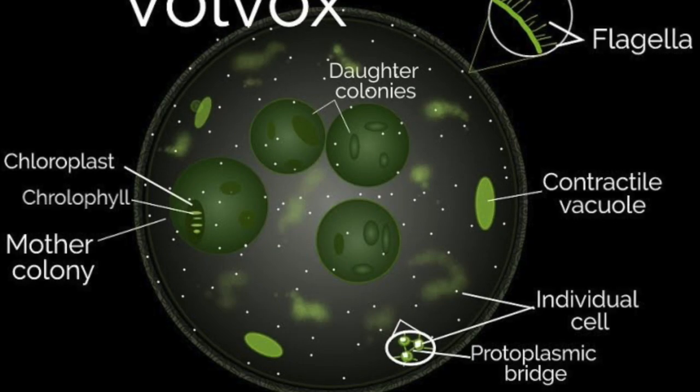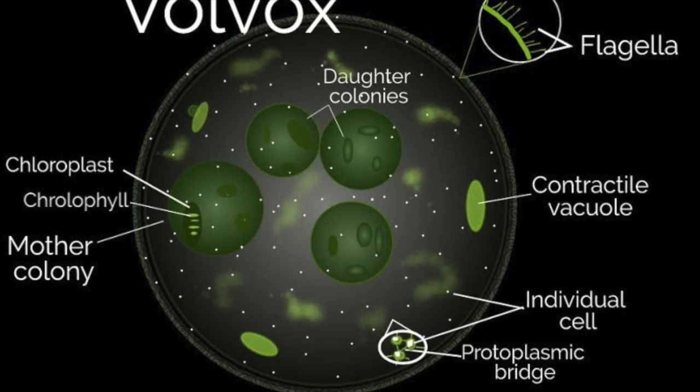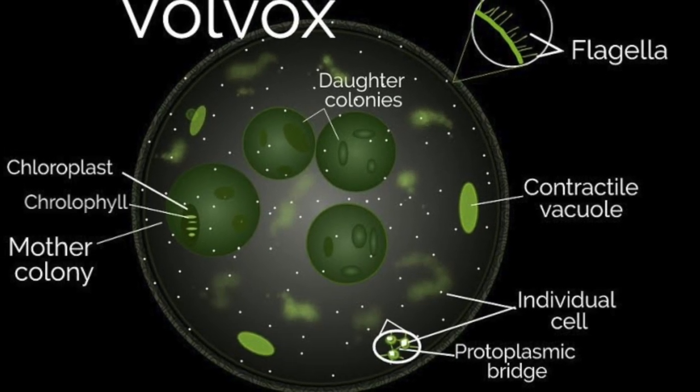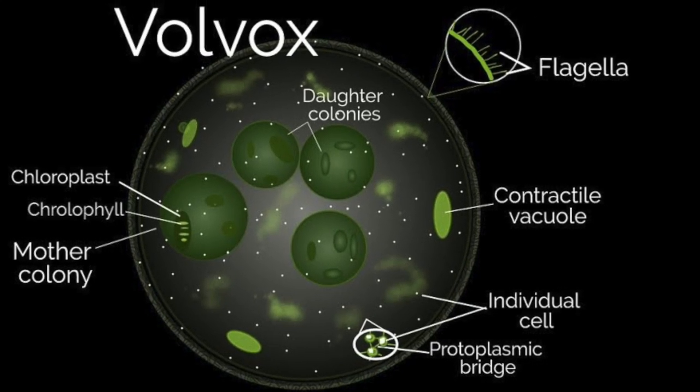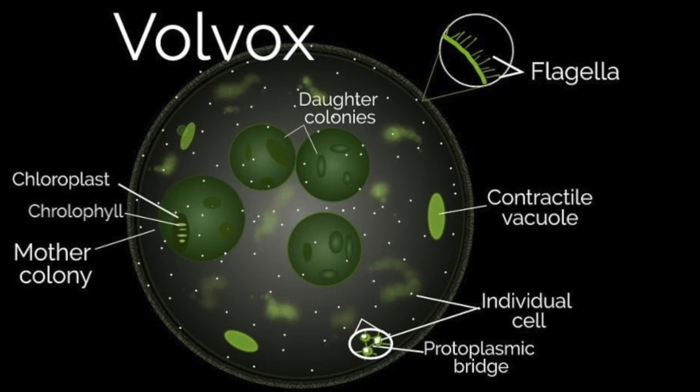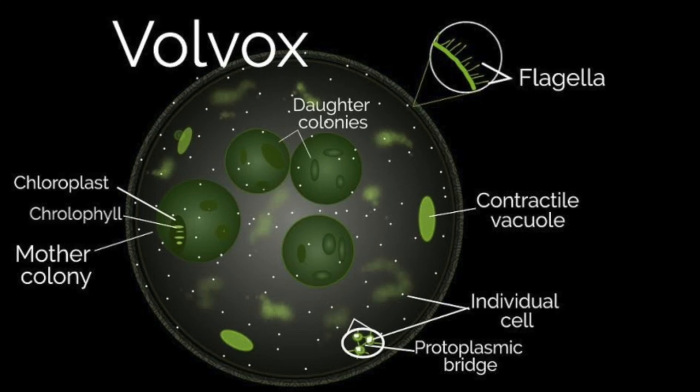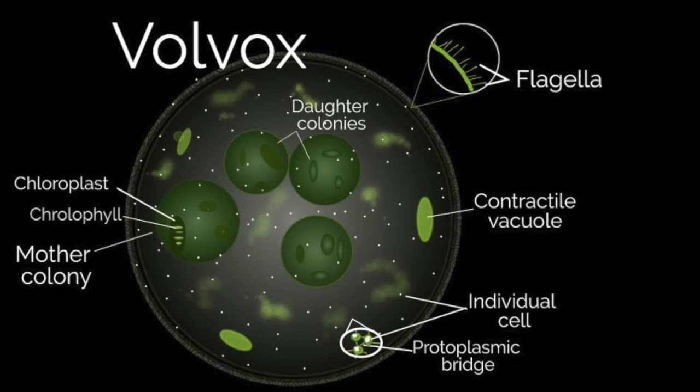Volvox globator, commonly known as volvox, is under phylum Chlorophyta. Volvox live in colonies that consist of smaller daughter colonies. When those daughter colonies mature, the parent colony houses the daughter colony's births, releasing them into the environment. Volvox can reproduce sexually or asexually. Another name for the reproduction of volvox is oogamous, a form of reproduction by the union of mobile male and immobile female gametes.